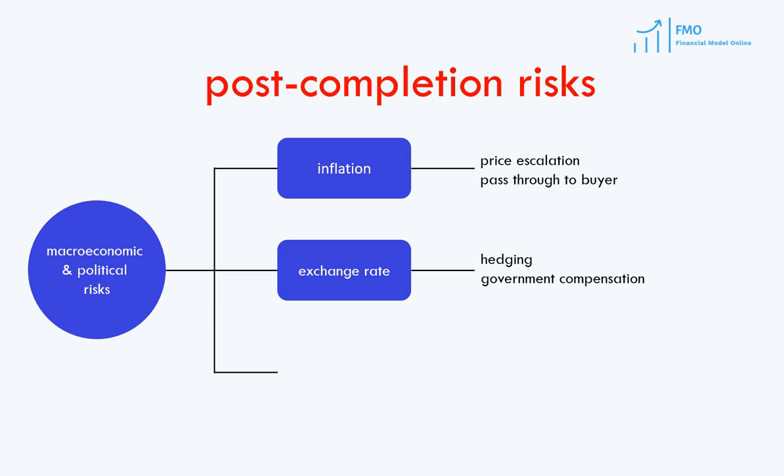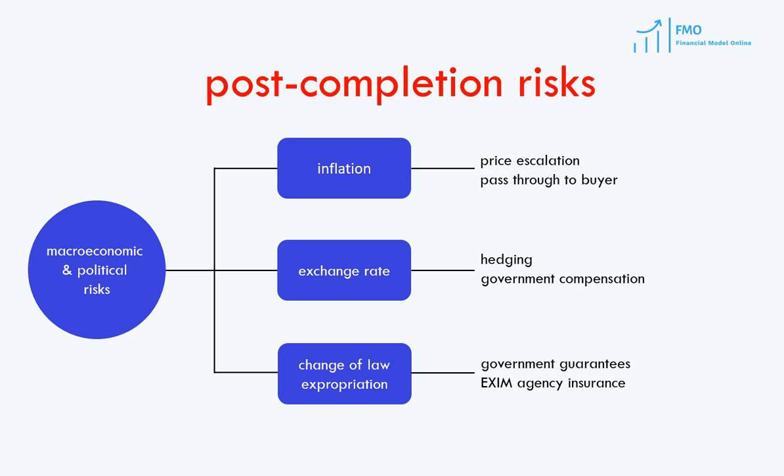Of course, in the end, the off-taker takes the risk of the exchange rate. Often in concession projects, the exchange rate risk is taken by the government, which compensates the project company for any losses from adverse exchange rate movements. Political risk — such as the risk of change of law or project expropriation — is often taken by the host government if the project is under concession, and insurance may also be available from export-import agencies such as US Ex-Im Bank.